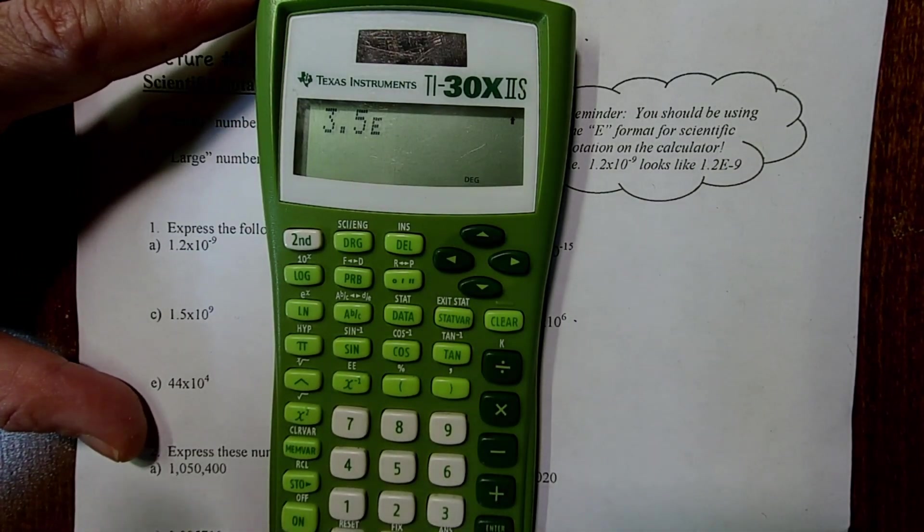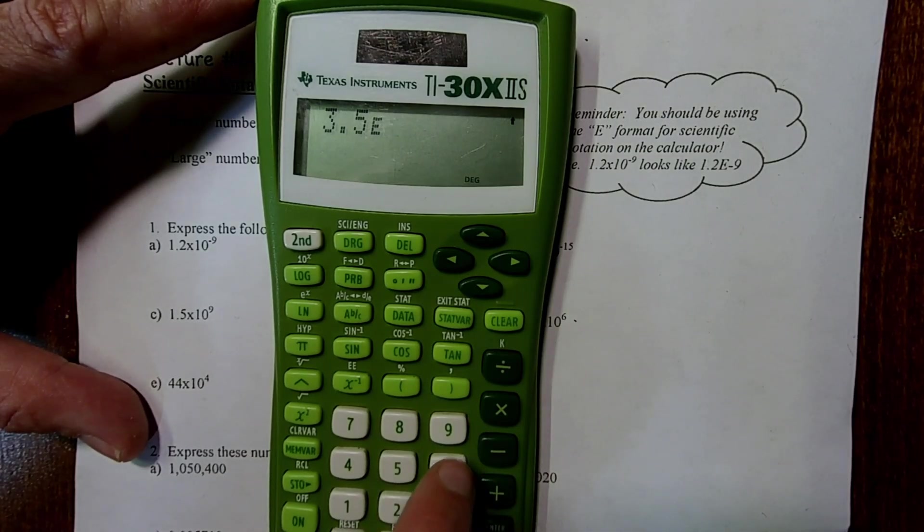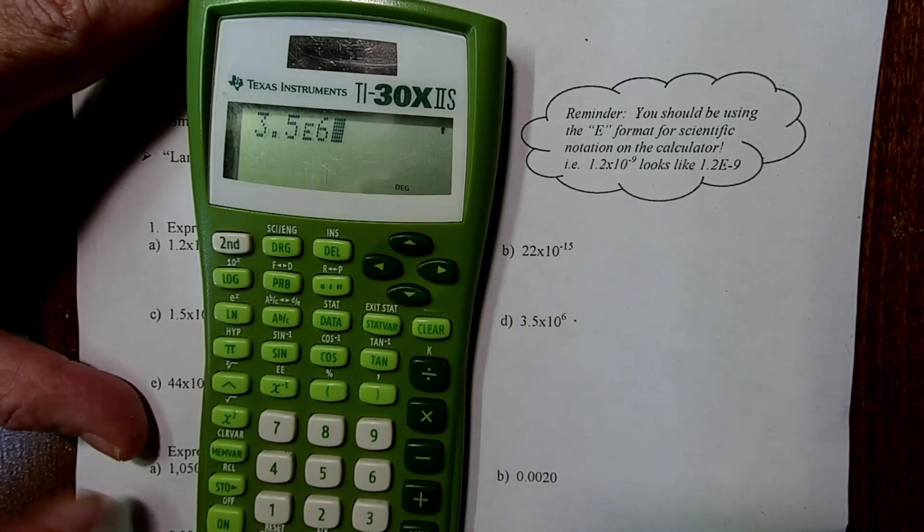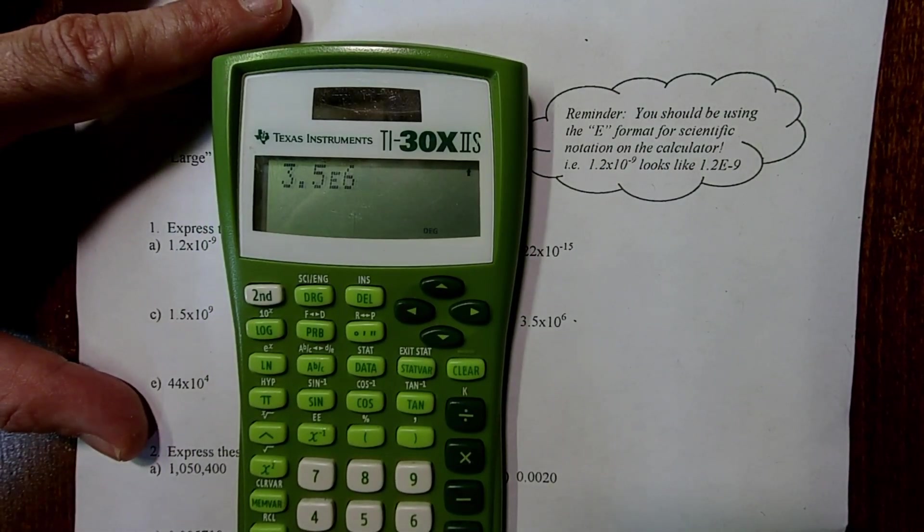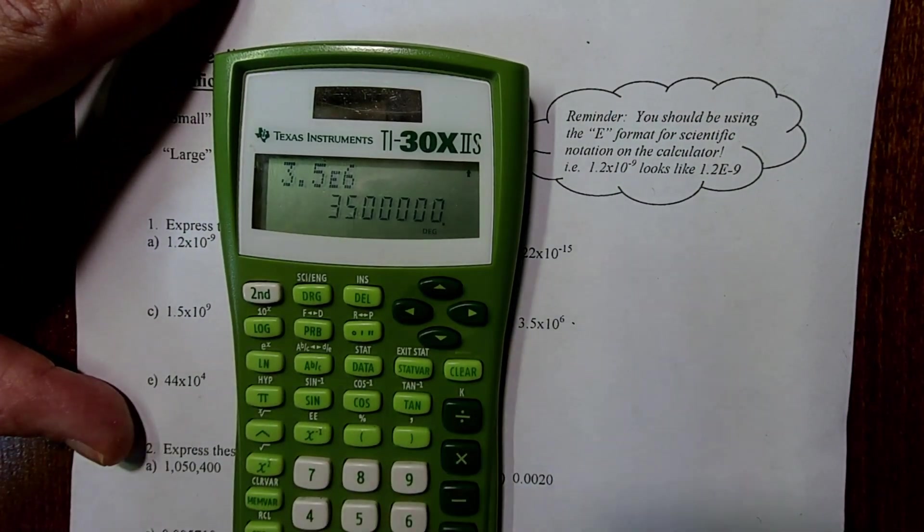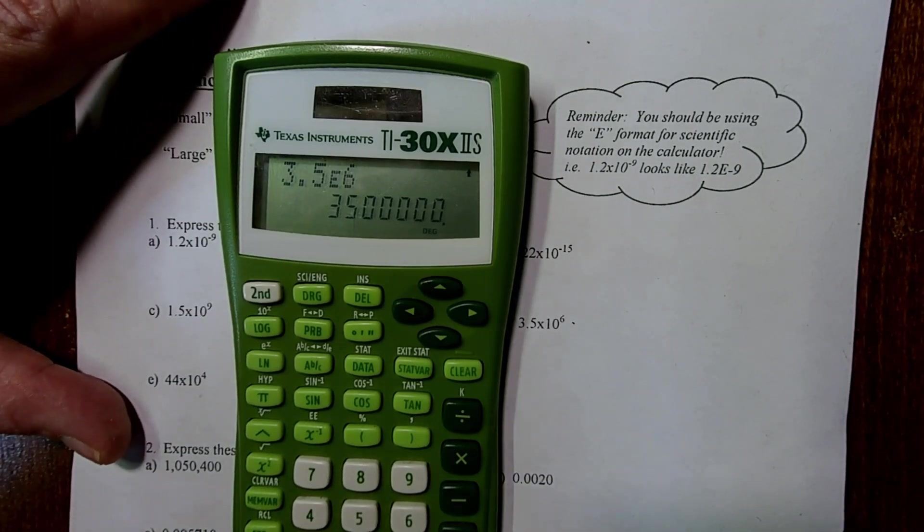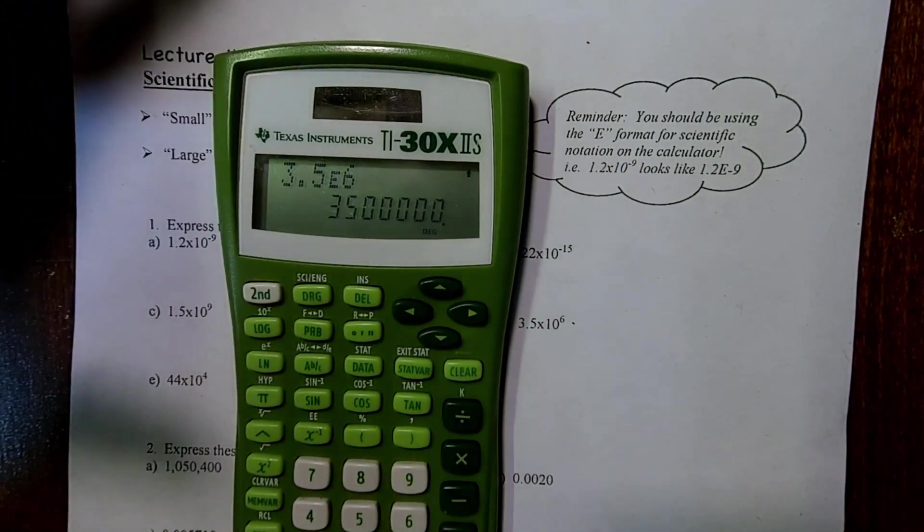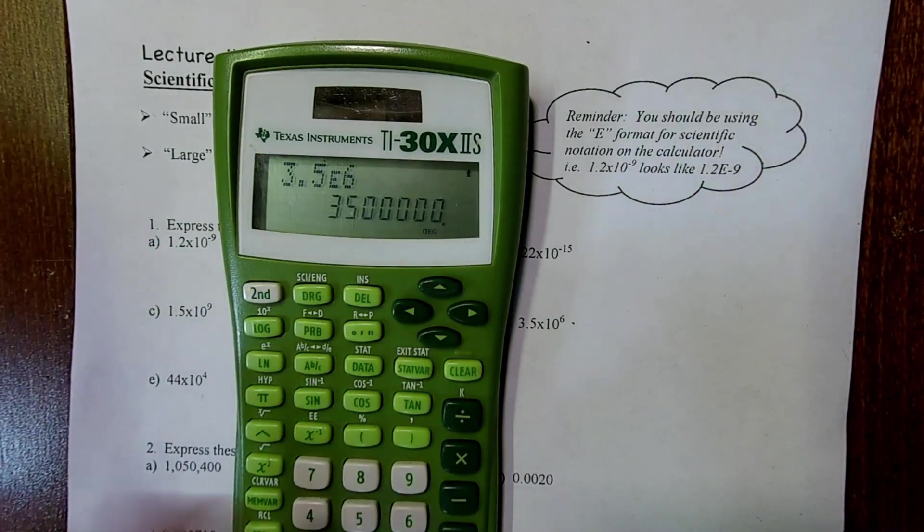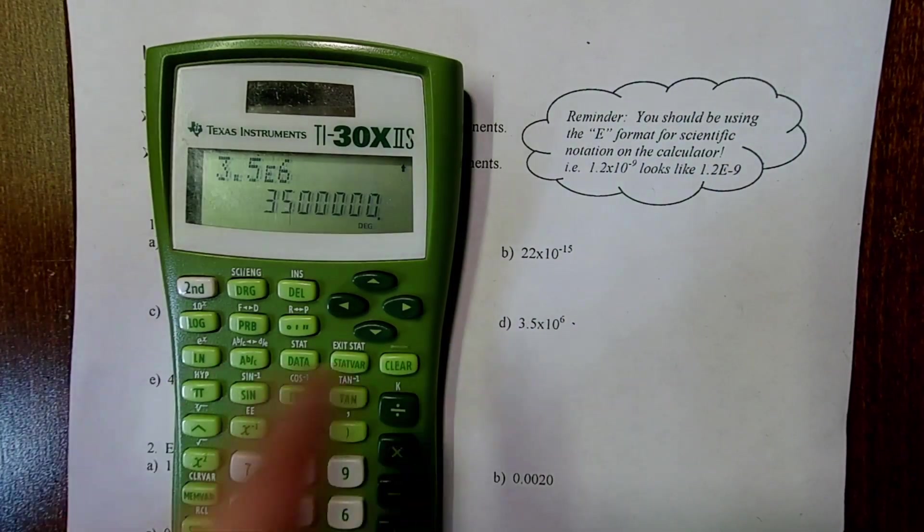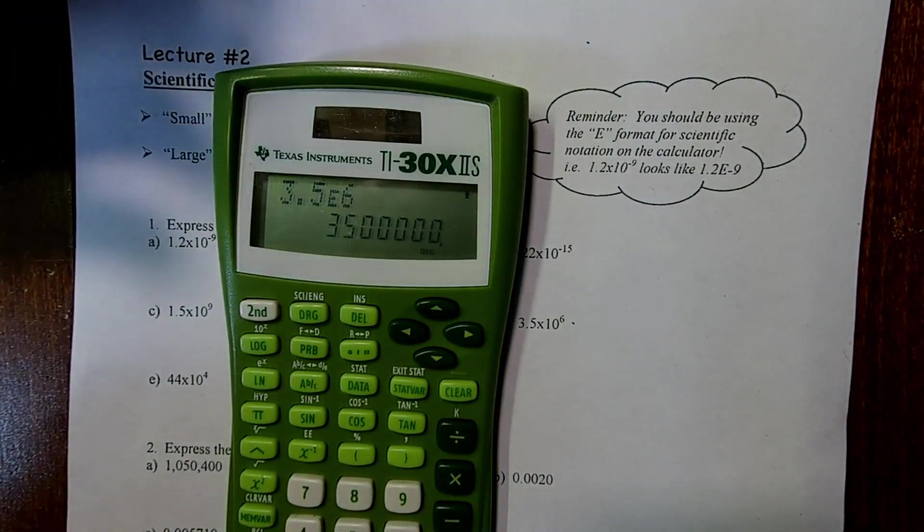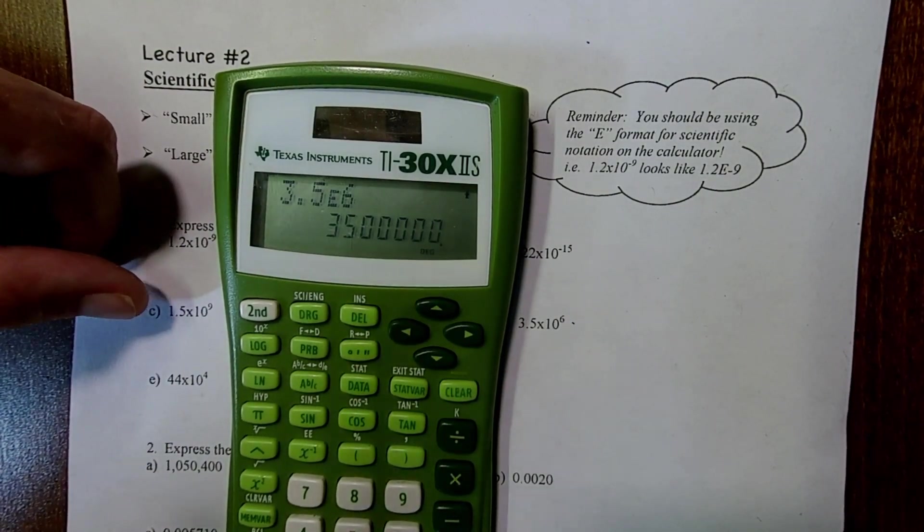That takes the place of times 10. So at this point, all I need to do is hit 6, and I'm done. I've entered 3.5 times 10 to the 6th. What's cool about this is if I hit enter at this point, the calculator converts that value to decimal form. So I can use this as a method to check. Did I convert properly to decimal form? Let me warn you, though, if the number's too big or too small, like 2.2 times 10 to the negative 15, that's not going to work out because we don't have enough space there.